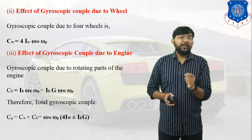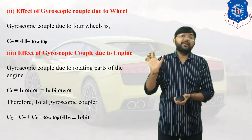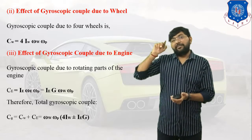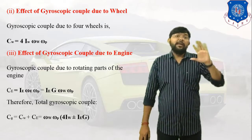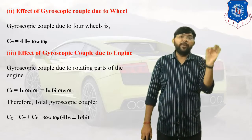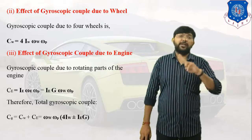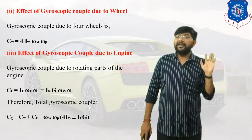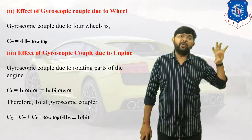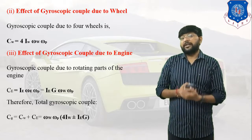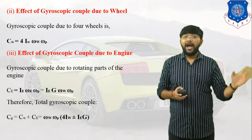In the total equation, ωw is the angular velocity of the wheel, found using V = ω·R, so ωw = V / rw, where rw is the radius of the wheel. Omega p is the angular velocity of the axis of precession, given by ωp = V / R, where R is the radius of curvature of the path.